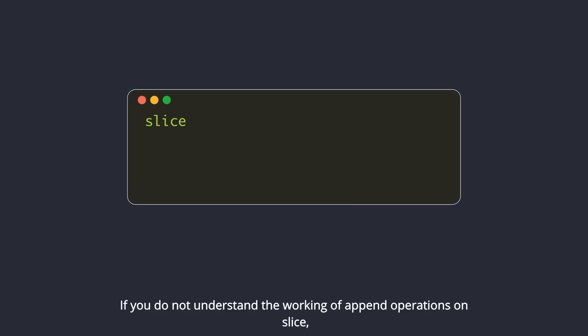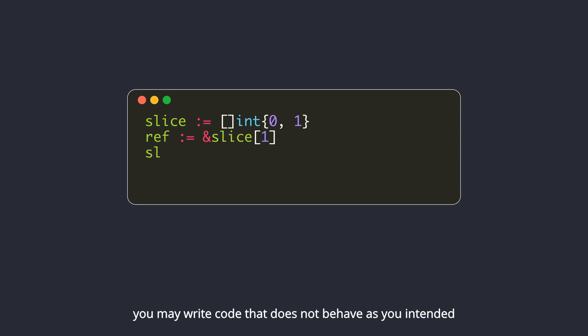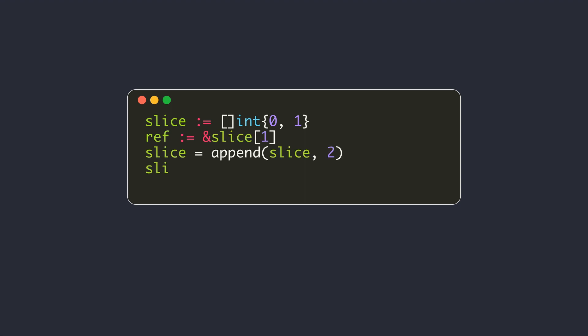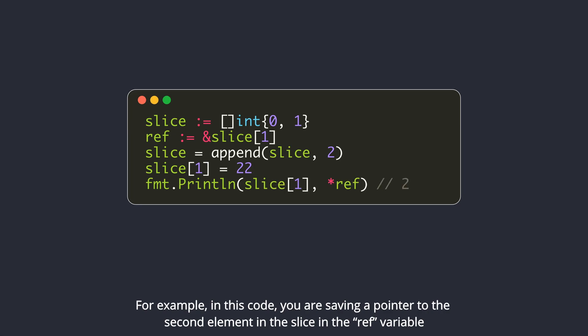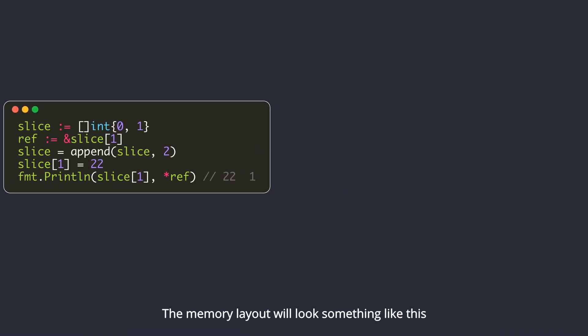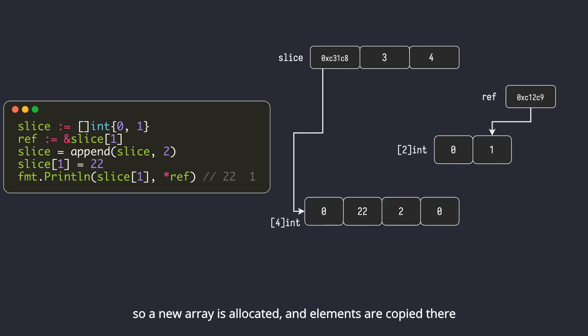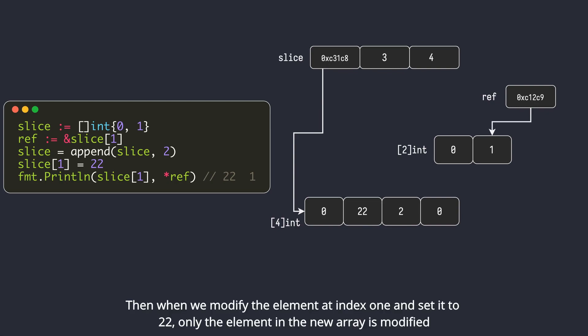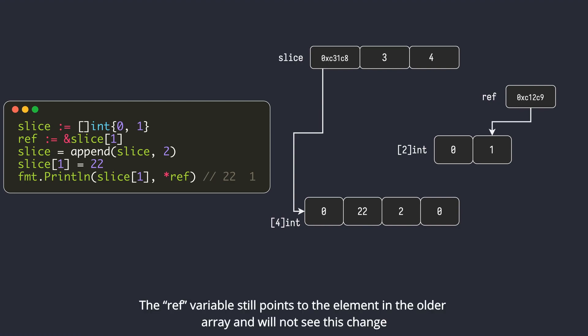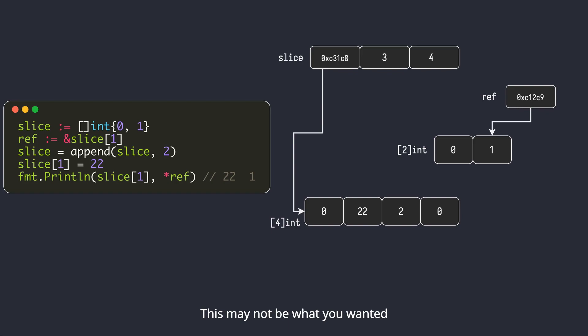If you do not understand the working of append operations on slices, you may write code that does not behave as intended. For example, in this code you are saving a pointer to the second element in the slice in the ref variable. When trying to append an element, the backing array is already at full capacity, so a new array is allocated and elements are copied there. Then when we modify the element at index 1 and set it to 22, only the element in the new array is modified. The ref variable still points to the element in the older array and will not see this change.